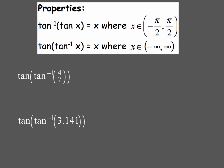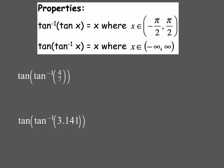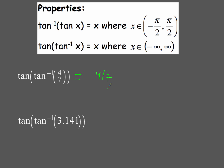The last two problems have tangent as the outside function, meaning we're looking for a trig ratio. The domain for arctangent's input is all reals, negative infinity to infinity. So tan(arctan(4/7)) — since 4/7 is within that range — equals 4/7. And tan(arctan(3.141)) — since 3.141 is also within that range — equals 3.141.